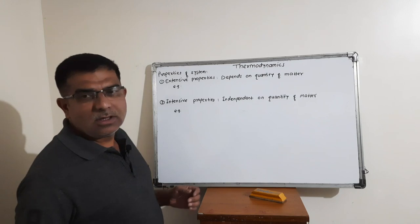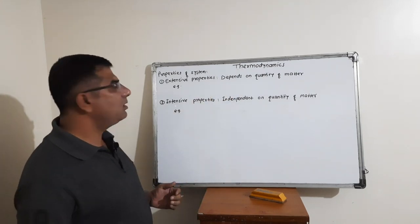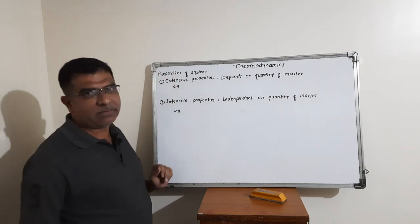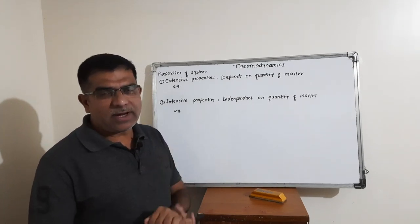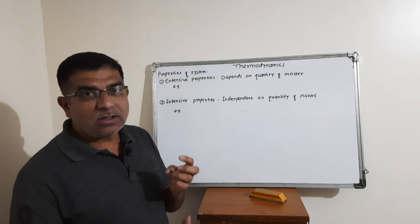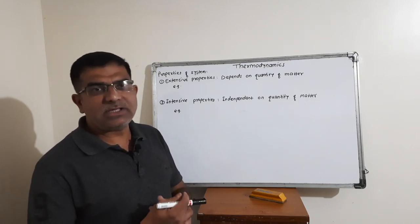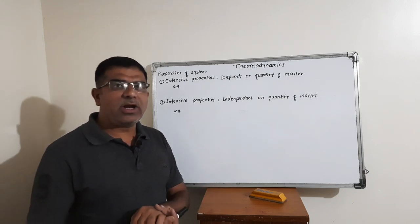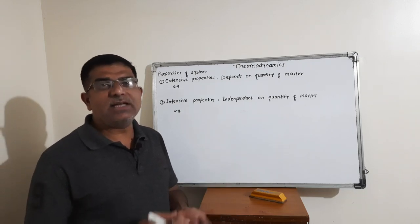In the topic of thermodynamics, the next article we discuss here is the properties of a system. In the last lecture, we defined thermodynamics and discussed its limitations. The first limitation is that thermodynamics is a macroscopic property. The second limitation is that thermodynamics cannot give an idea about the rate of reaction or the mechanism of a reaction.